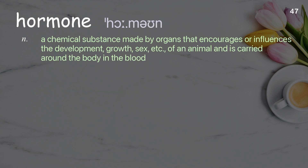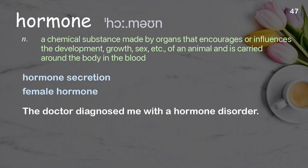Hormone. A chemical substance made by organs that encourages or influences the development, growth, sex, etc., of an animal and is carried around the body in the blood. Examples: hormone secretion, female hormone. The doctor diagnosed me with a hormone disorder.